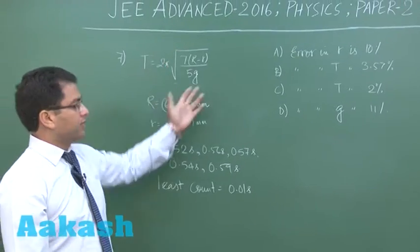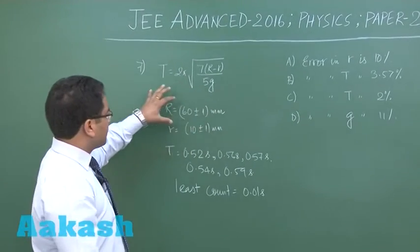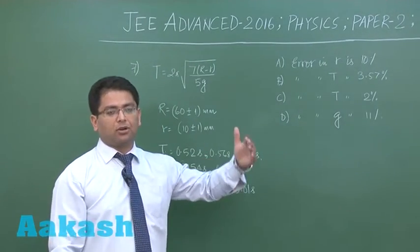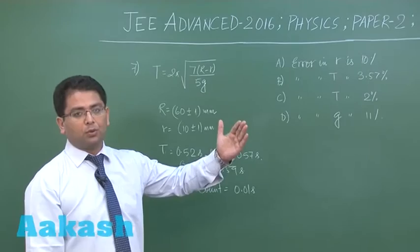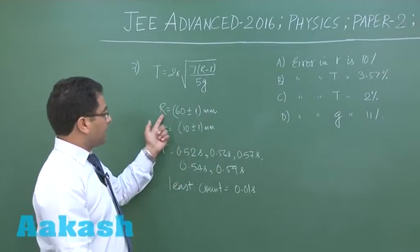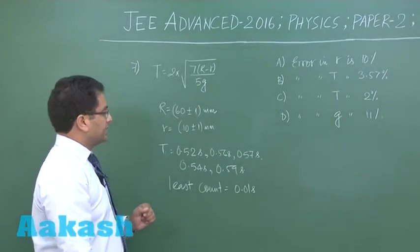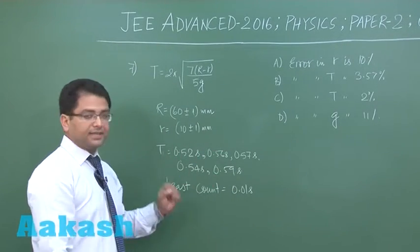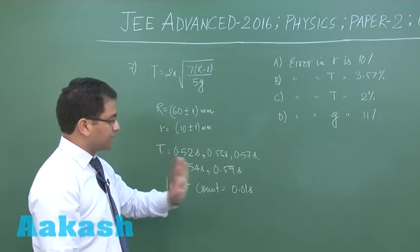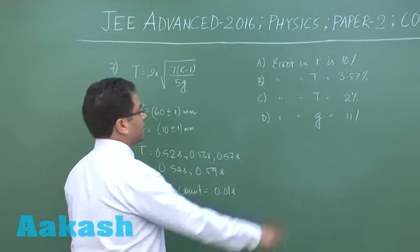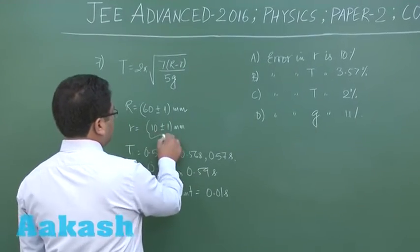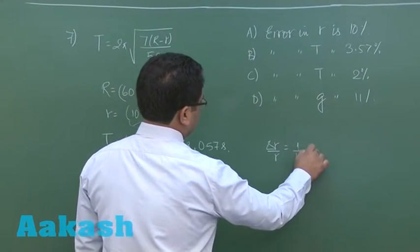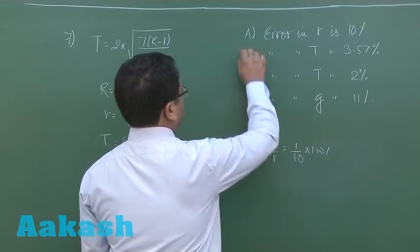This question involves experimental physics. The data concerns a spherical ball rolling in a bowl, which has a specific time period formula where capital R is the bowl radius, small r is the ball radius, and the time period is measured by a stopwatch with a known least count. We first need to verify the error in small r. The error in small r is 1/10 × 100% = 10%.